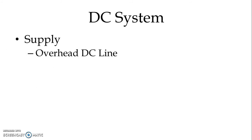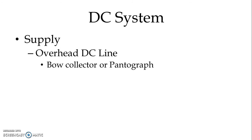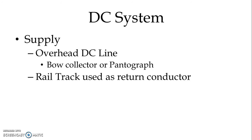We get supply from the overhead DC line. The overhead DC system is used by means of a bow collector or pantograph. The rail track is used as the return conductor.